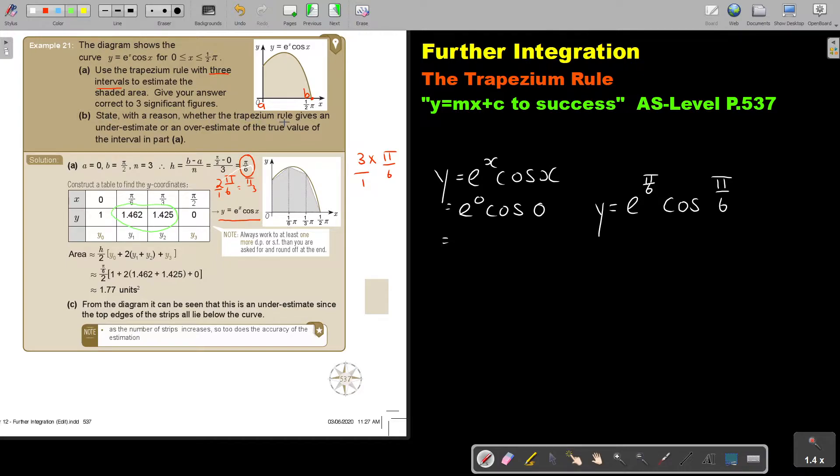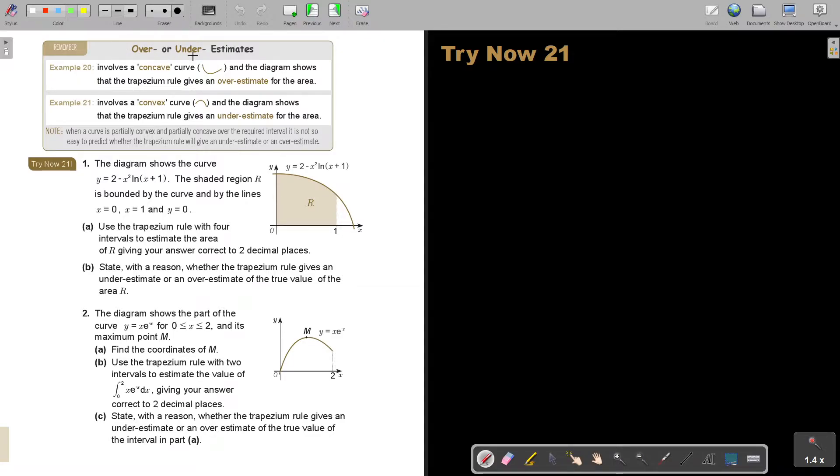State with a reason whether the trapezium rule gives an underestimate or an overestimate of the true values. If you draw it in, you see it's a little bit under. It's not over. So from the diagram, it can be seen that this is an underestimate, since the top edges of the strips all lie below the curve. As the number of strips increases, so too does the accuracy of the estimation. So the more intervals you have, the more accurate your answer will be. But I want to show you this summary. So under or overestimate. If it's concave, then it's usually an overestimate. And if it's convex, then the diagram gives an underestimate to the area.